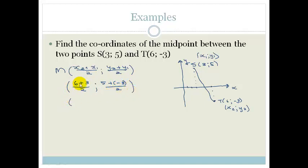all divided by 2. And then y2 plus y1 is going to be 5 plus minus 3, all over 2. So 6 plus 3 is 9, 9 divided by 2 is 4 and a half. And 5 plus minus 3 works out to be 5 minus 3 which is 2 and 2 divided by 2 is 1.